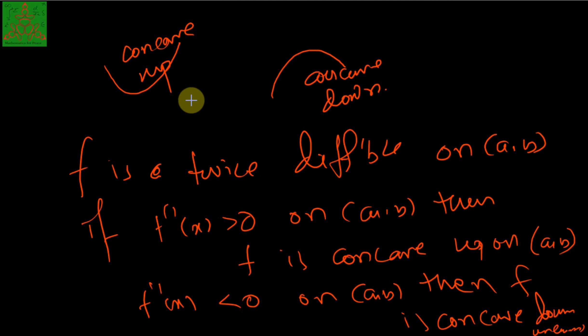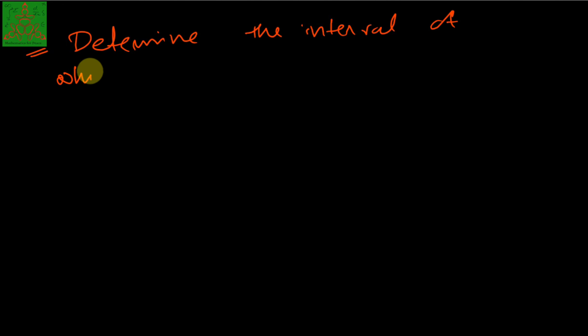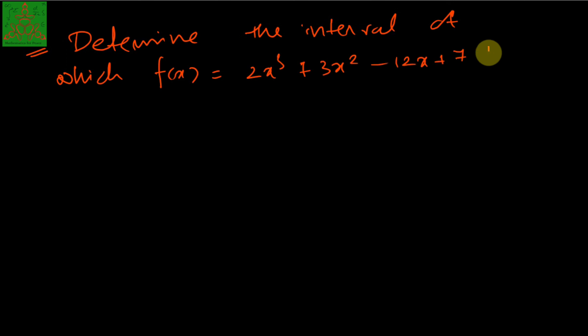Now let us see some examples. We have discussed the first derivative test, stationary points, inflection points, and concavity using the double derivative test. Let us determine the intervals at which f(x) = 2x³ + 3x² − 12x + 7 is (a) increasing and (b) decreasing.